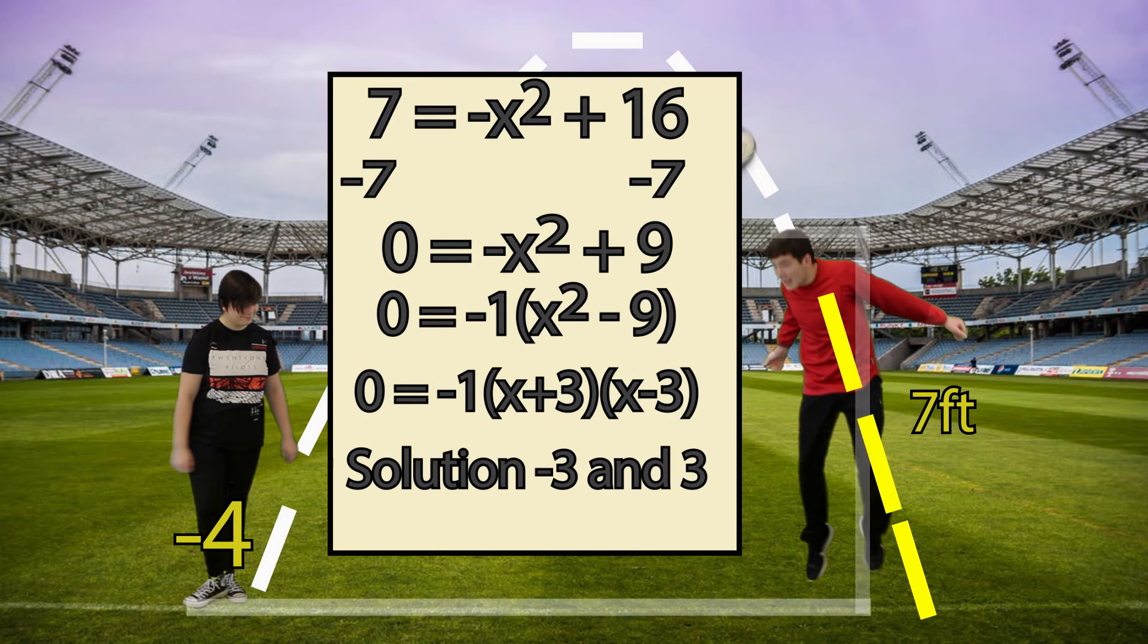So if we solve for x when the height is 7, we see that Cooper is either at negative 3 or positive 3. And selecting only 3 because this only makes sense.